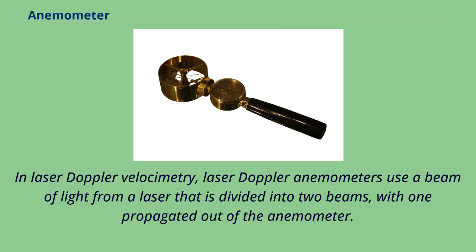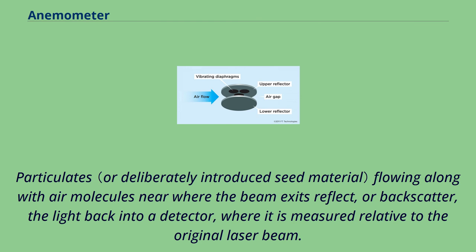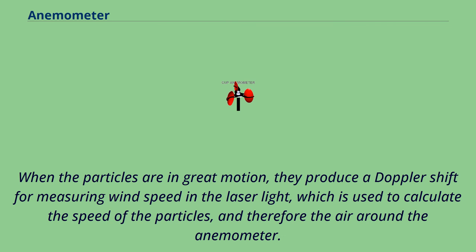In laser Doppler velocimetry, laser Doppler anemometers use a beam of light from a laser that is divided into two beams, with one propagated out of the anemometer. Particulates flowing along with air molecules near where the beam exits reflect, or backscatter, the light back into a detector, where it is measured relative to the original laser beam. When the particles are in great motion, they produce a Doppler shift for measuring wind speed in the laser light, which is used to calculate the speed of the particles, and therefore the air around the anemometer.